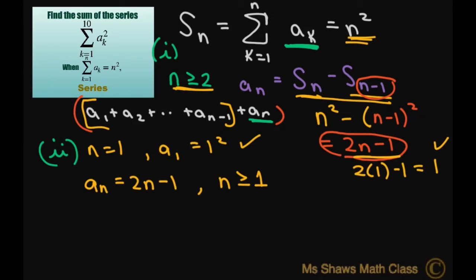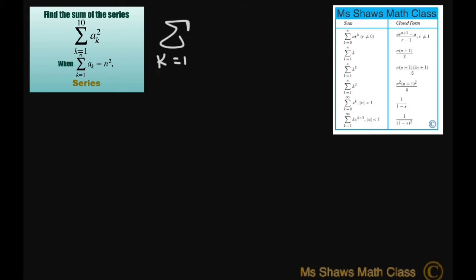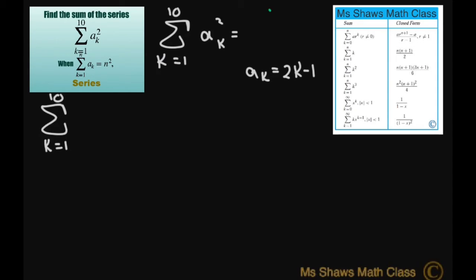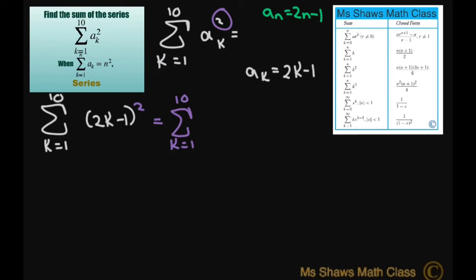Now let's write this out. The sum from k equals 1 to 10 of a sub k squared equals the sum from k equals 1 to 10 of 2k minus 1, and then we square it. So this becomes the sum from k equals 1 to 10 of (2k minus 1) squared. Let's expand: we get the sum from k equals 1 to 10 of 4k squared minus 4k plus 1.